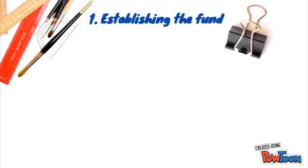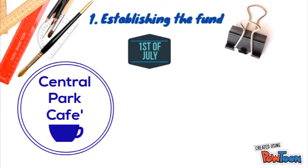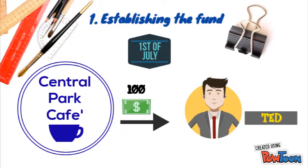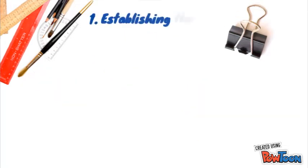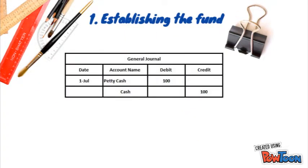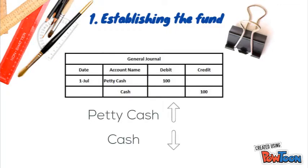Allow me to illustrate an example. Suppose that on the 1st of July, Central Park Cafe writes a $100 check for the Petty Cash Fund and assigns it to Ted as the custodian. Consequently, a journal entry is recorded by debiting Petty Cash as it increases and crediting cash as it decreases. Although cash decreases, there is no change in total assets as cash remains in the business.